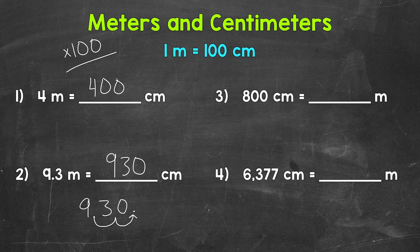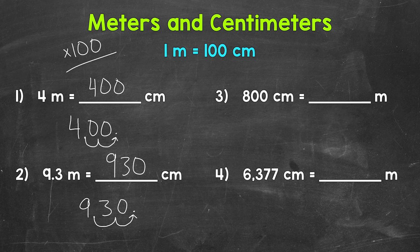Let's go back to number 1 with 4 meters to show that moving the decimal works there as well. We have 4 — the decimal always comes after a whole number — move it once, twice, fill with zeros, and we get 400. To recap: when we go from meters to centimeters, multiply by 100, and we can do that by moving the decimal twice to the right.